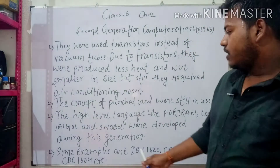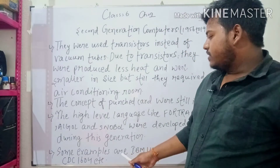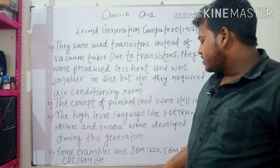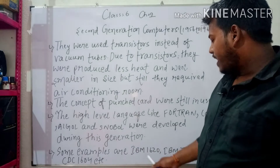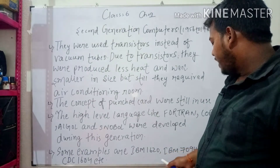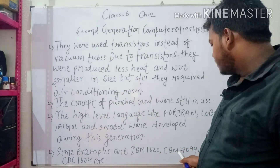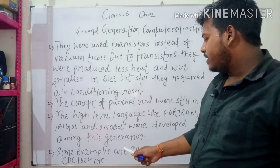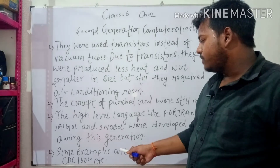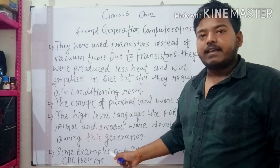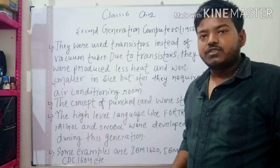Next, examples of Second Generation Computers: IBM 1620, IBM 7094, CDC 1604, etc. These are Second Generation Computers.